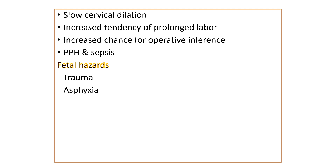There is a chance for operative intervention. If malpresentation is present, if the uterus is not contracting effectively, or if severe disproportion is present and engagement is not occurring, we will go for other alternatives to ensure the safety of the mother and baby — sometimes forceps, sometimes caesarean, or sometimes vacuum delivery.